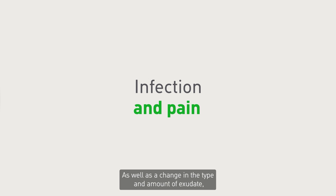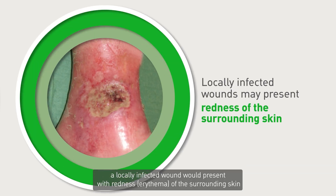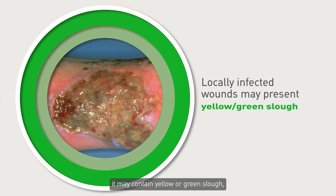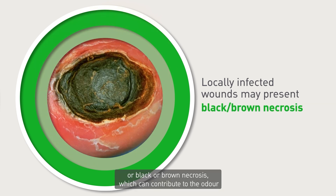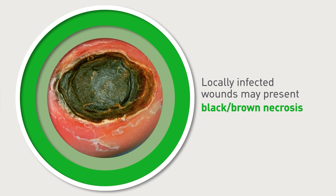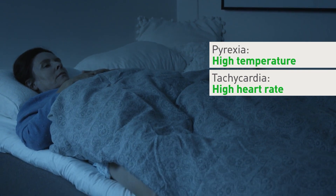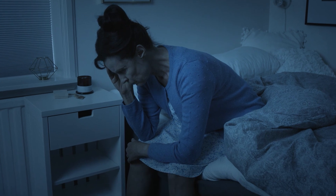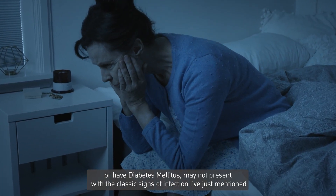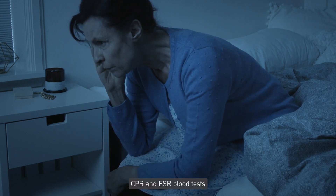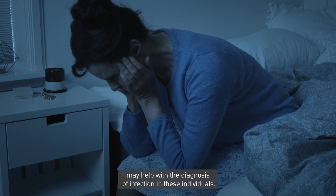As well as a change in the type and amount of exudate, a locally infected wound would present with redness and erythema of the surrounding skin, and may have an offensive odour. Rather than a healthy red granulating wound bed, it may contain yellow or green slough, or black or brown necrosis, which can contribute to the odour and provide a breeding ground for bacteria. In addition, Mary would be feeling generally unwell and may have pyrexia and tachycardia. Remember that individuals who are immunosuppressed or have diabetes mellitus may not present with the classic signs of infection; a white cell count, CRP and ESR blood tests may help with diagnosis in these individuals.